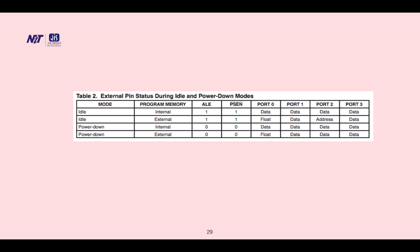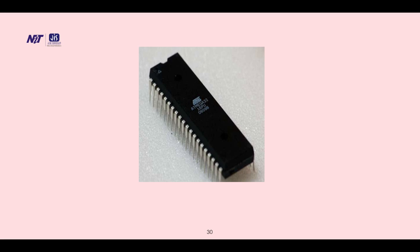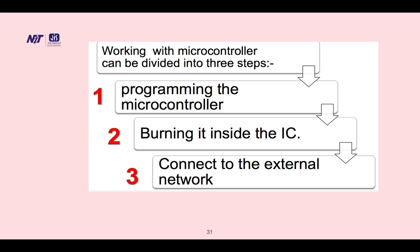So this is how the microcontroller looks. Working with microcontroller can be divided into three steps: programming the microcontroller, burning it inside the IC, and connecting to the external network. Microcontroller programming is very much similar to programming languages.